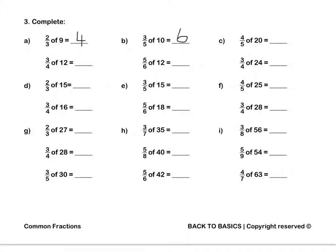Lastly, four fifths of 20: 20 divided by 5 is 4, and 4 times 4 is 16. Pause this video to complete Question 3.